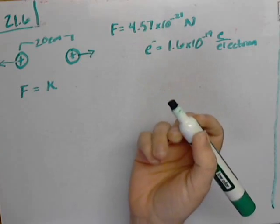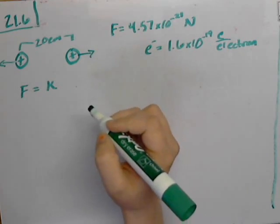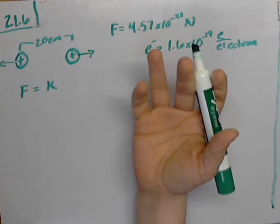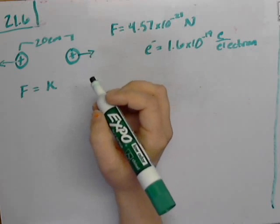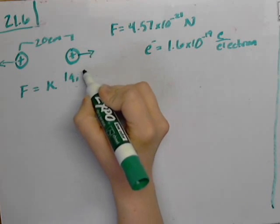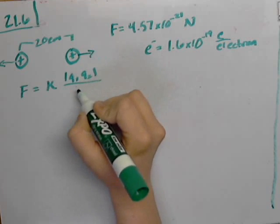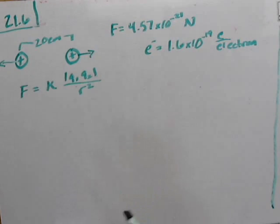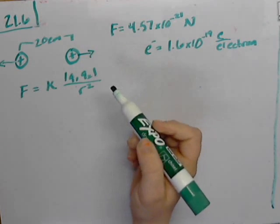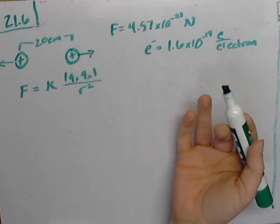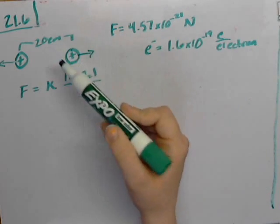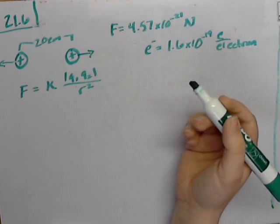I'm going to use K instead of the 1 over 4 pi epsilon naught. It's the same thing. It's in the chapter in the book. Q1, Q2 divided by R squared. Now all we need to do is plug in these numbers that we already have to figure out what our Q is.